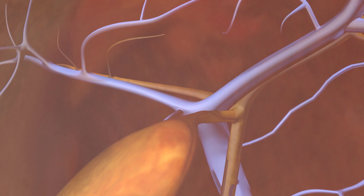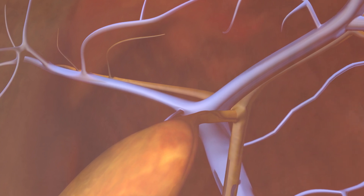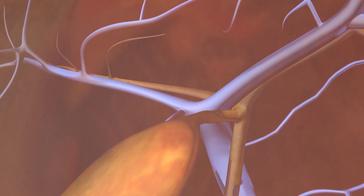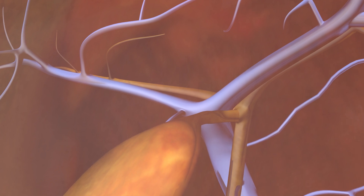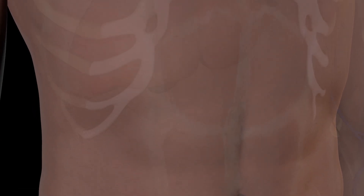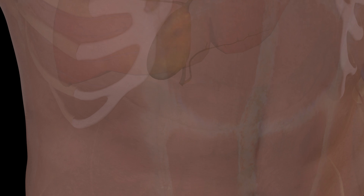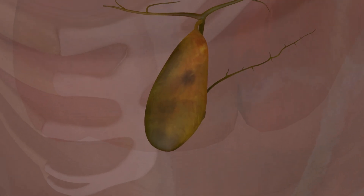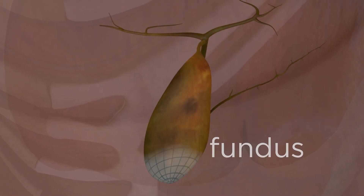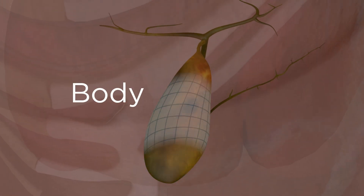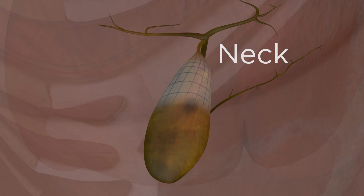The normal biliary ducts and hepatic artery branches are typically not well seen because of their small size. The gallbladder is divided anatomically into three regions: the fundus, the body, and the neck.